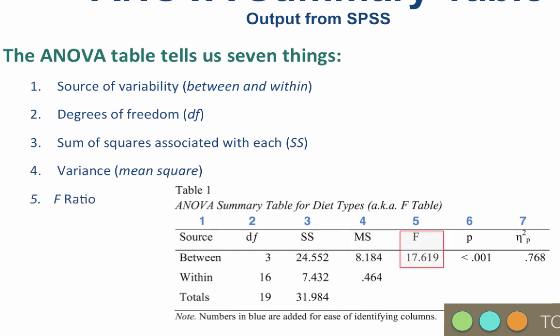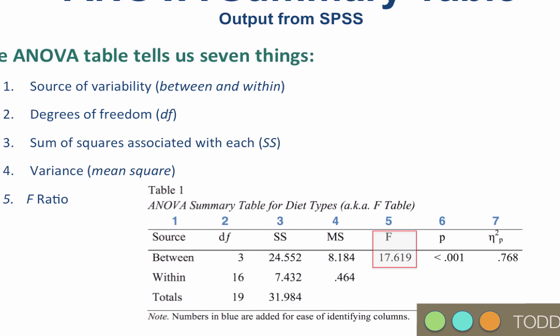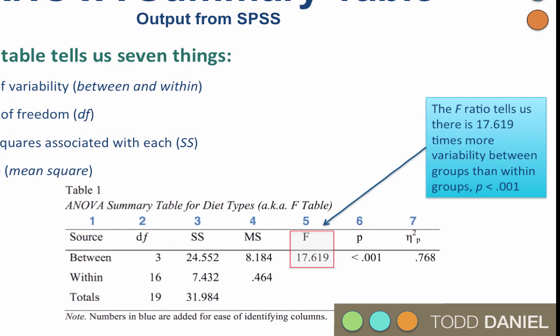Fifth is the F-ratio. The F-ratio is the mean square between divided by the mean square within. The F-ratio tells us that there is 17.619 times more variability between than there is within groups.